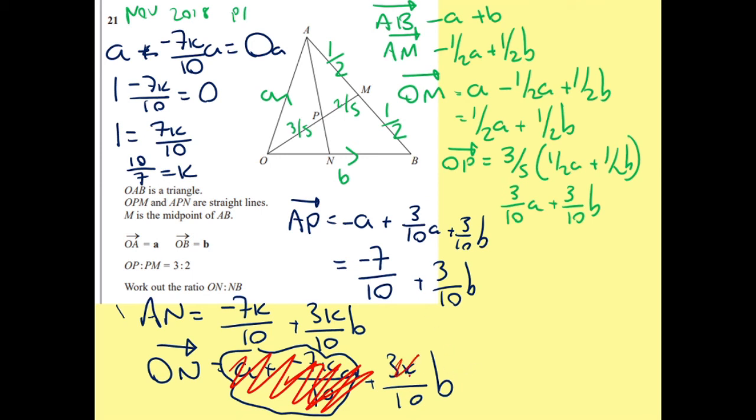So if I do 3 over 7, I get 3 sevenths. And let's make it nice. So I don't have the fractions. I times both by 7. I've got 3 to 4.